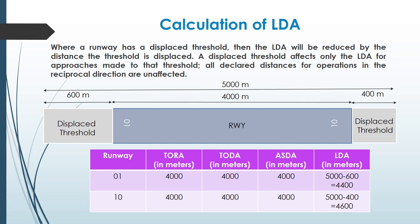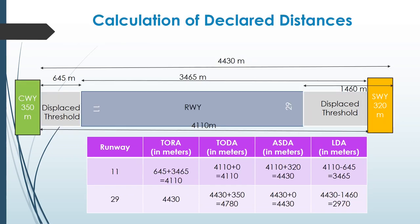Now let us combine all the situations in one runway and calculate the declared distances for both runway directions. In these examples we assume that the portion of runway where the threshold is displaced has sufficient pavement strength to bear the weight of the aircraft. Let us calculate the declared distances for runway 11/29. Since declared distances are calculated for each runway direction, let us consider the direction of runway 11 to start with. The TORA is the length of the runway available and suitable for an aircraft to make its ground run.